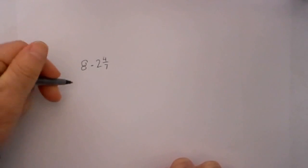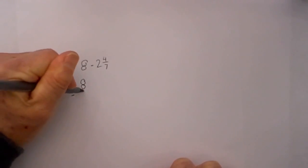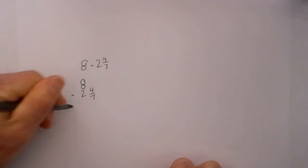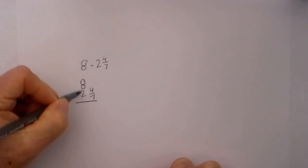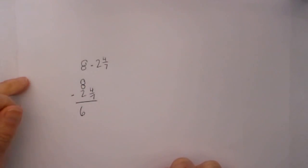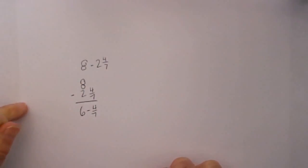I will rewrite it in a vertical fashion: 8 minus 2 and 4/7. Now all I have to do is add one step. I will go 8 minus 2 equals 6 minus 4/7. Now I will work it exactly like I did before.